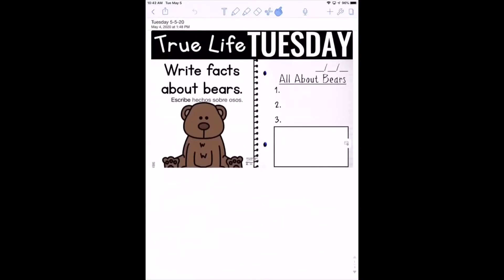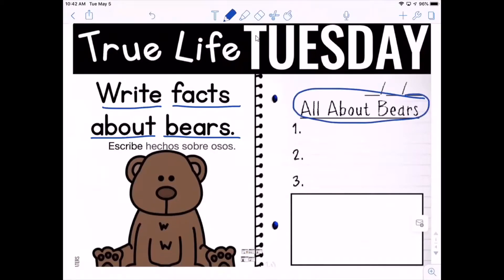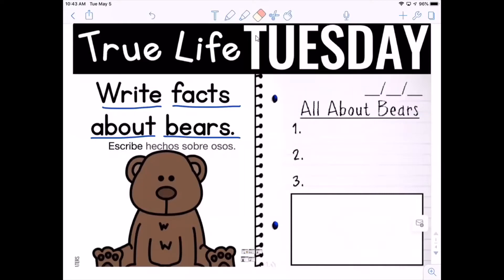Now we're going to go to our writing. Today our writing for Tuesday says: write facts about bears. So on your paper you're going to write the date, then copy the title 'All About Bears,' then write number one: Bears have claws. Number two: Bears have sharp teeth. Number three: Bears can climb trees. Then draw your picture in your writing journal.